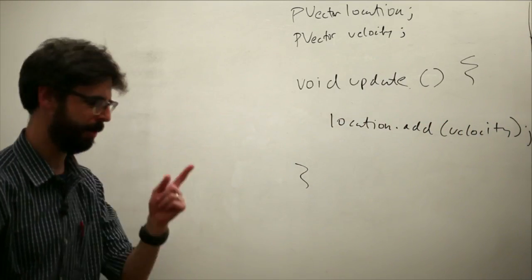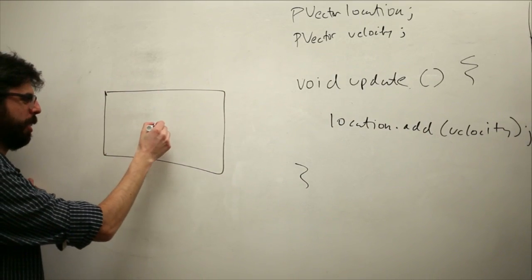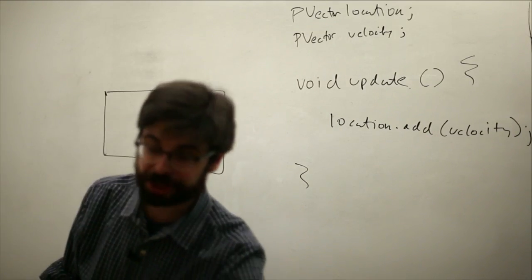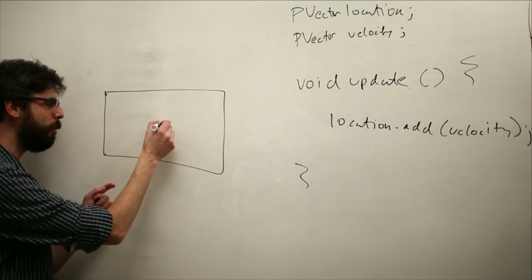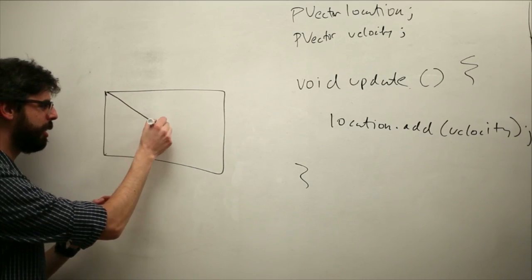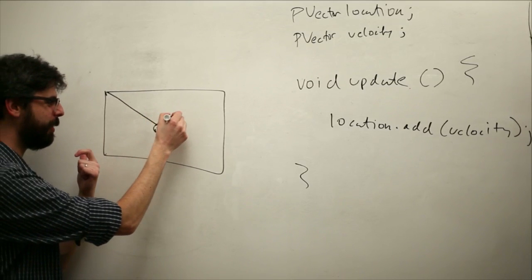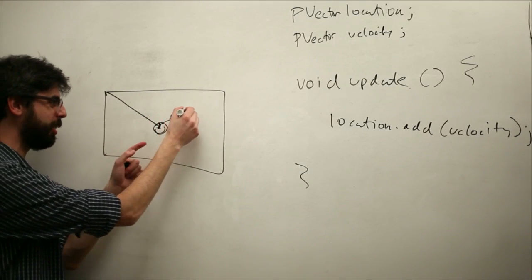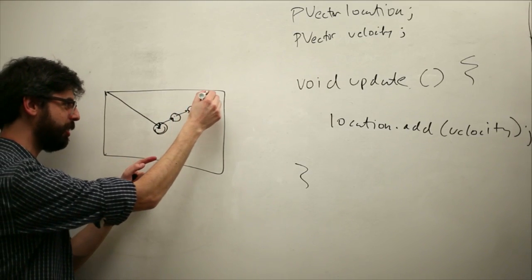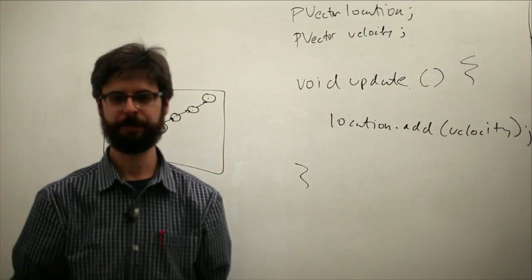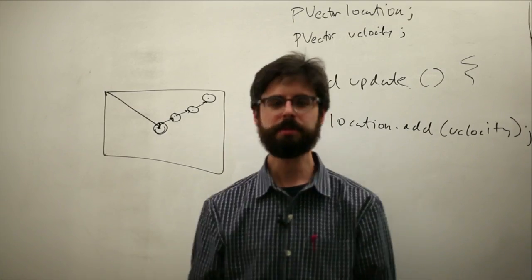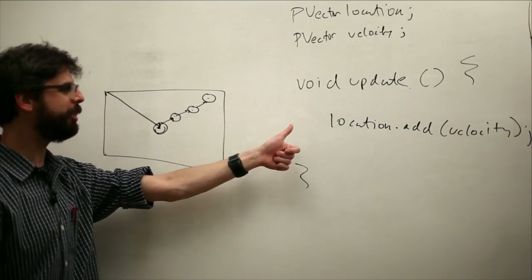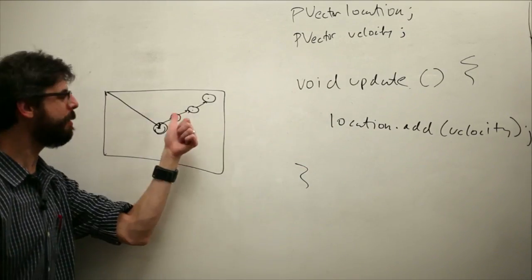We add velocity to location. What's going on here? We have a processing window. We have an object that has a position vector. It has an x and a y. We're drawing it there as a circle. That's the location vector. Maybe it has a velocity, which says velocity location, so now it's over here. We have velocity location, so now it's over here. Great.